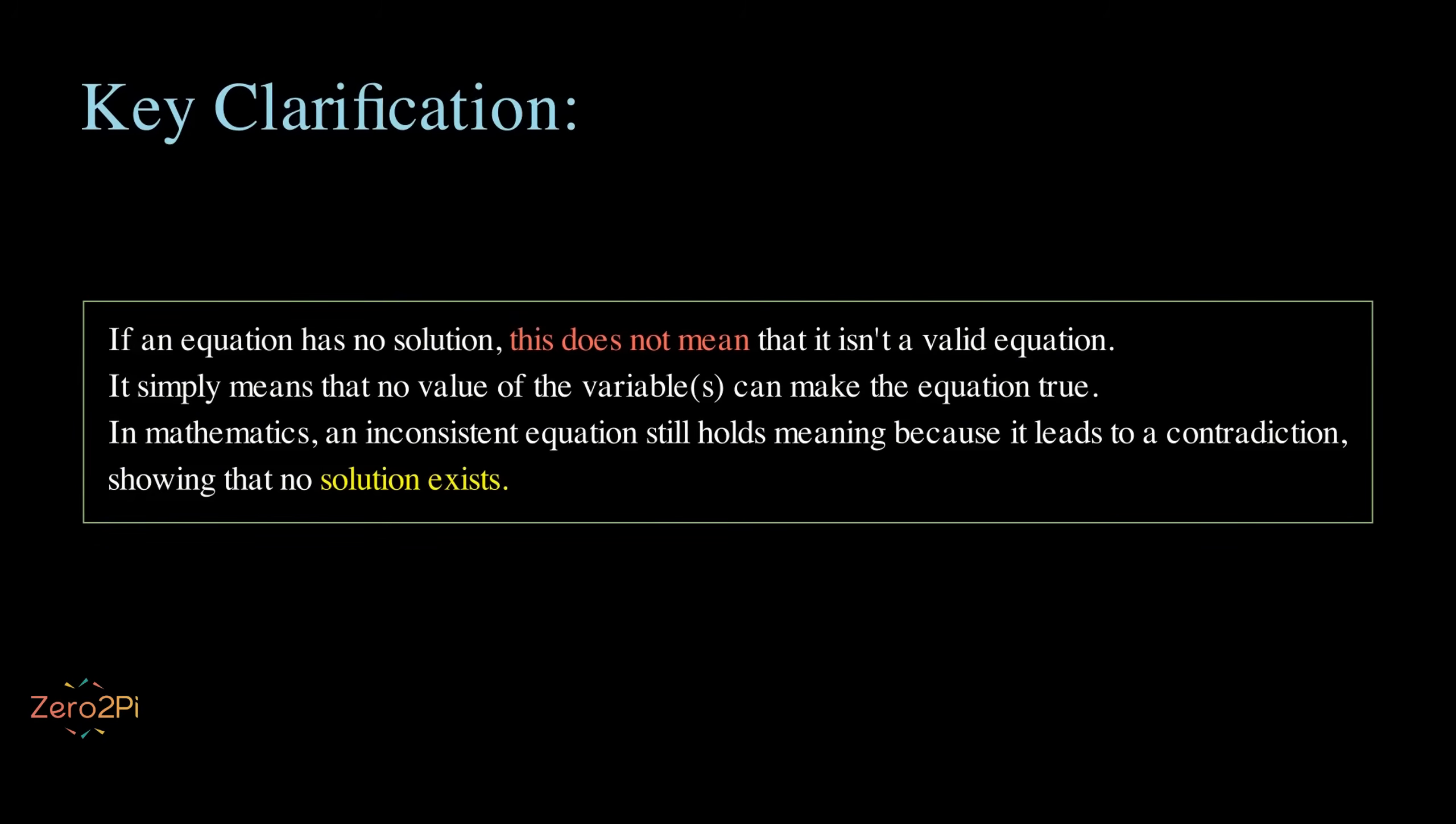In the end, we can say that if an equation has no solution, this does not mean that it isn't a valid equation. It simply means that no value of the variables can make the equation true. In mathematics, an inconsistent equation still holds meaning because it leads to a contradiction, showing that no solution exists.